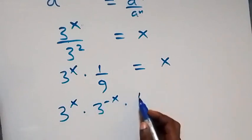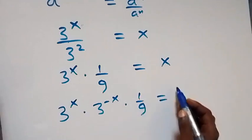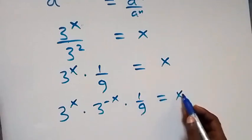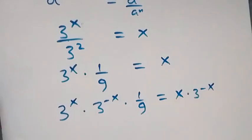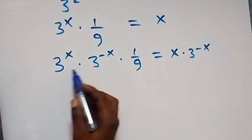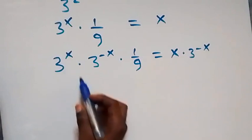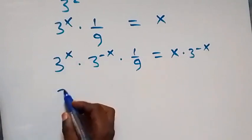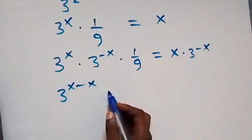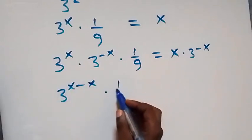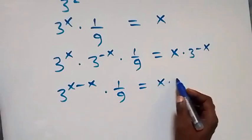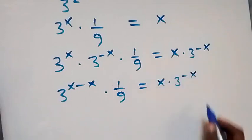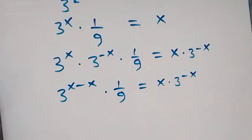Then times 1 over 9 here, equals x times 3 raised to power minus x. From the law of indices we can combine the powers, giving 3 raised to power x minus x, times 1 over 9, now equals x times 3 raised to power minus x. Here x minus x is 0, so 3 raised to power 0.